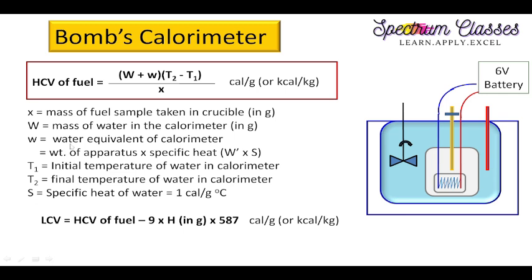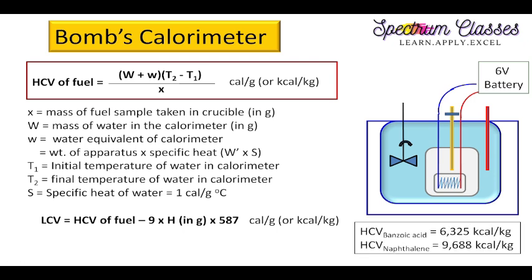If you don't have the water equivalent of the calorimeter, you can calculate it as the weight of the apparatus multiplied by the specific heat of the container material. Experimentally, the HCV of benzoic acid or naphthalene is used to determine the water equivalent of the calorimeter. This is done as a preliminary experiment before determining the GCV of an unknown fuel.